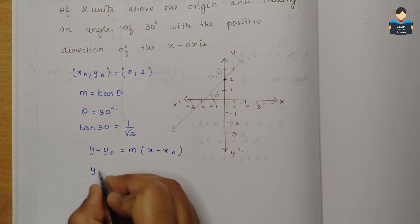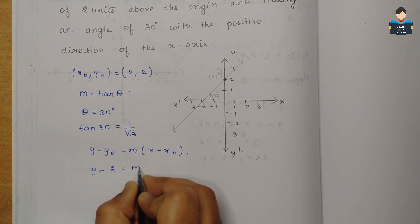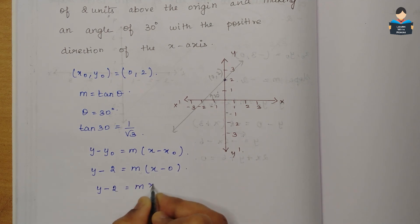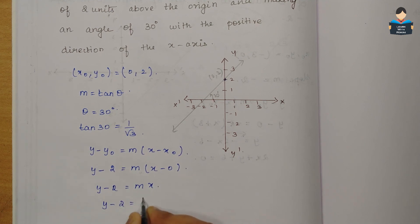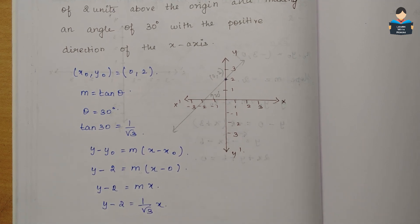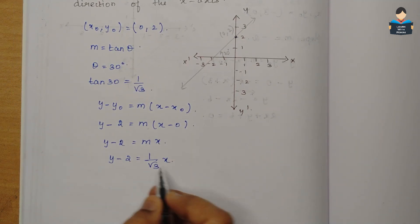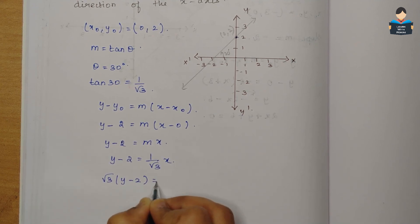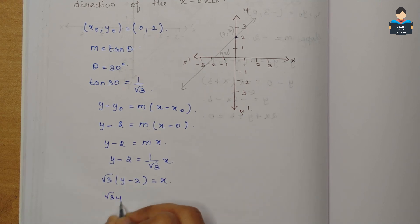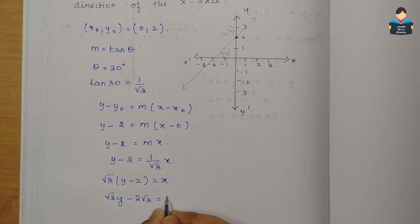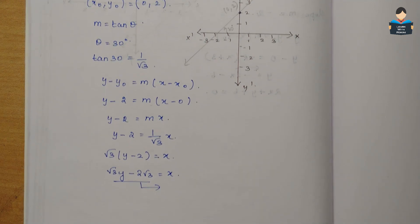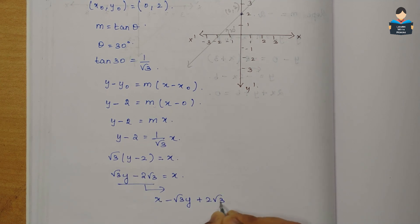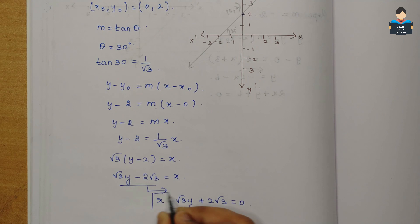Using point-slope form: y minus y0 equals m into x minus 0, which gives y minus 2 equals mx. Substituting m equals 1 by root 3: y minus 2 equals x by root 3. Rearranging, the required equation is x minus root 3 y plus 2 root 3 equals 0.